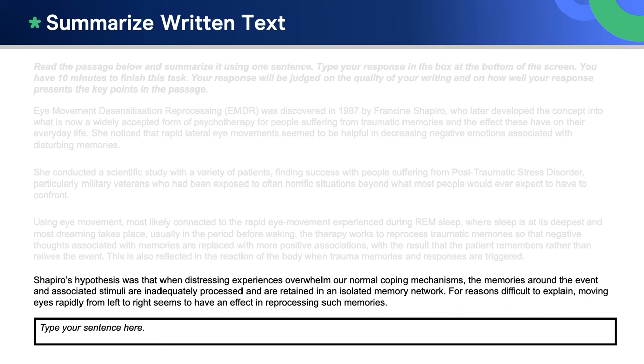Shapiro's hypothesis was that when distressing experiences overwhelm our normal coping mechanisms, the memories around the event and associated stimuli are inadequately processed and are retained in an isolated memory network. For reasons difficult to explain, moving eyes rapidly from left to right seems to have an effect in reprocessing such memories.